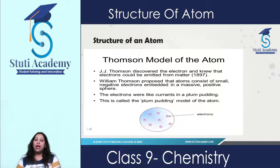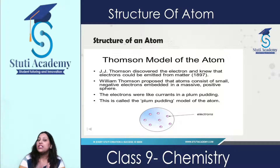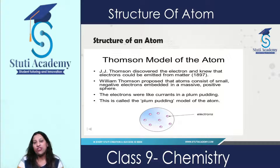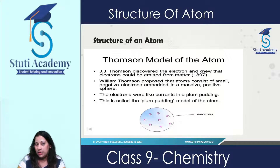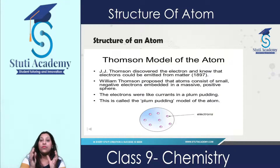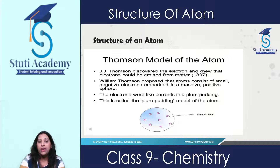Now in today's class, I will start with the Structure of an Atom. As we know, an atom is not the smallest particle — it is made up of subatomic particles: electrons, protons, and neutrons, which were discovered by J.J. Thomson, J. Chadwick, and E. Goldstein. After their discoveries, we came to know that the atom is composed of these subatomic particles. But where are these subatomic particles located, and how does this atom look? On the basis of the structure of the atom, various scientists gave their models.